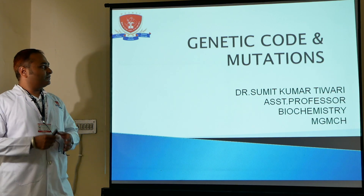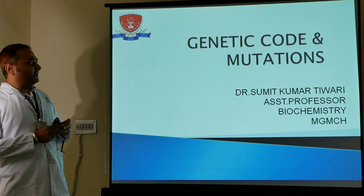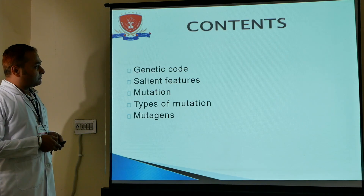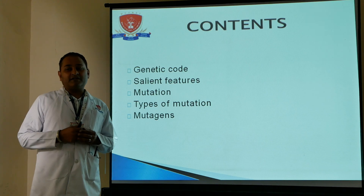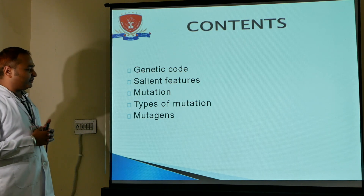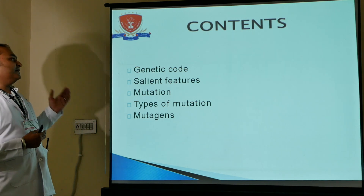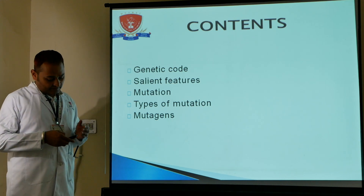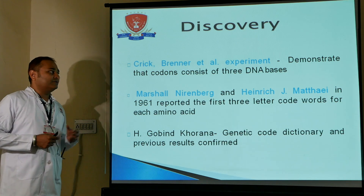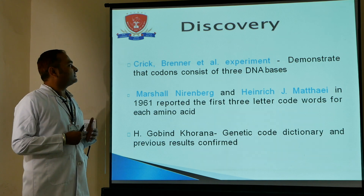Today we will start a very important topic for genetics: genetic code and mutation. The content covers genetic code, salient features, mutation, types of mutation, and mutagens. We will discuss each in further detail, including the scientists who discovered the genetic code.